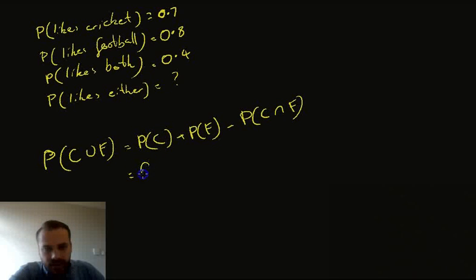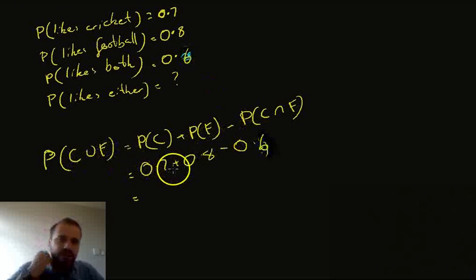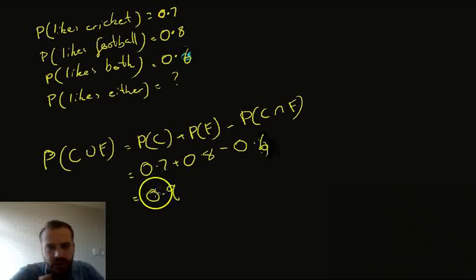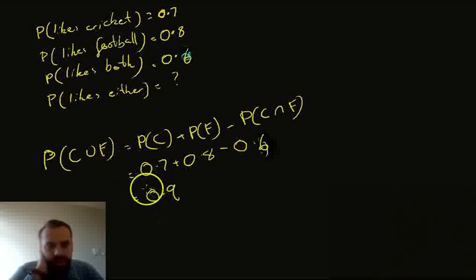And we can put this all together, 0.7 plus 0.8 minus 0.4. I might have stuffed this up a little bit. Better change that. You can think about why that doesn't work. Change that to 0.5. Let's change it to 0.6. So the probability of 0.7 plus 0.8 minus 0.6, that's going to be 0.5 minus 0.6. That's going to be 0.9. So if they like cricket, they like football, they like both, they like either, the probability that they like either is 0.9.